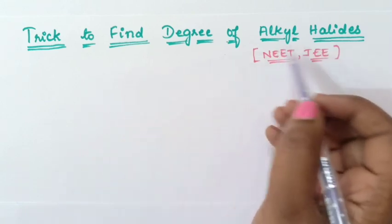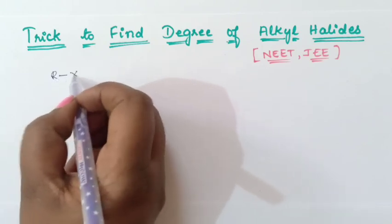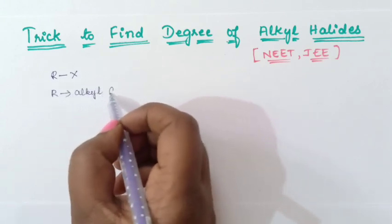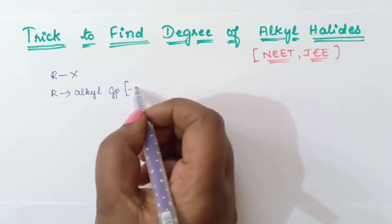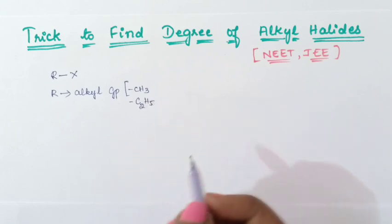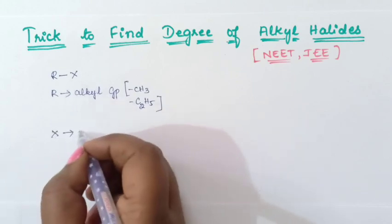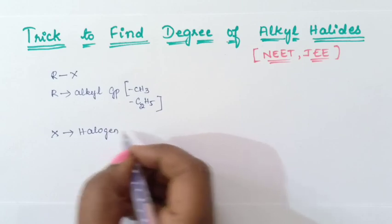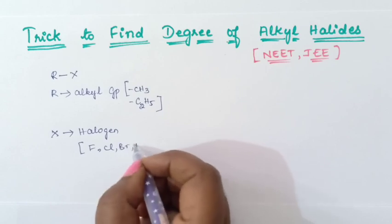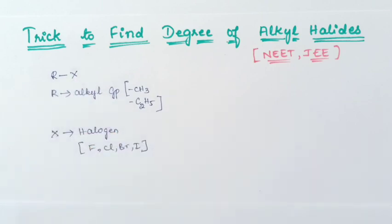So students, we will see what is alkyl halide. Alkyl halide can be represented by the general formula RX, where R is an alkyl group. The alkyl group can be a methyl group CH3, it can be an ethyl group C2H5, or it can be a propyl group. And X is nothing but a halogen — fluoro, chloro, bromo, or iodine. So if a halogen is attached to an R group, we call that an alkyl halide.